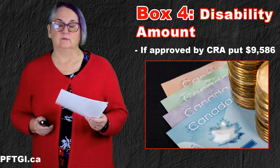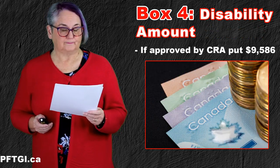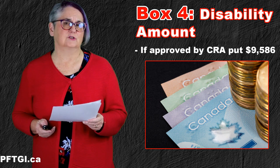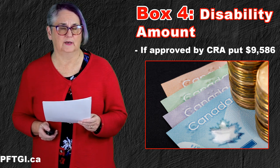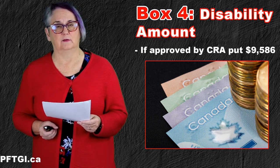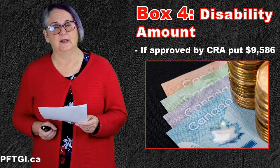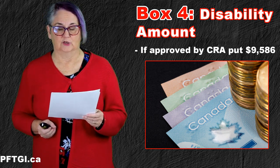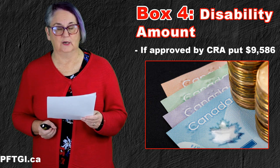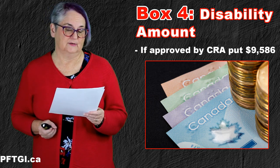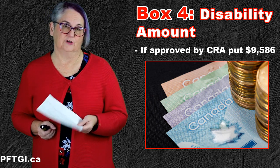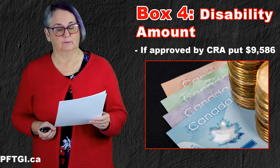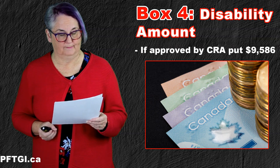Box 4 is your disability amount. If you have the disability tax credit and you've sent the information to CRA and they've confirmed they're granting you the disability credit, then the amount is $9,586 that you will put in box 4.